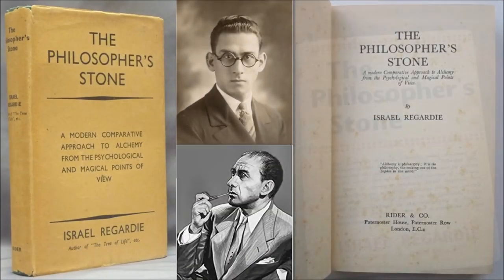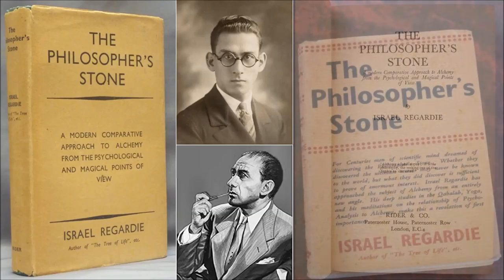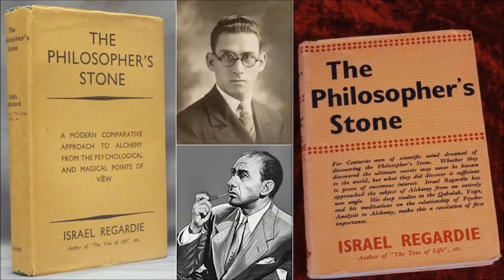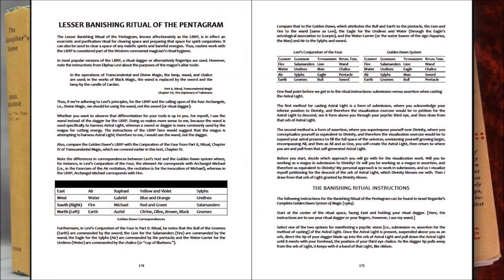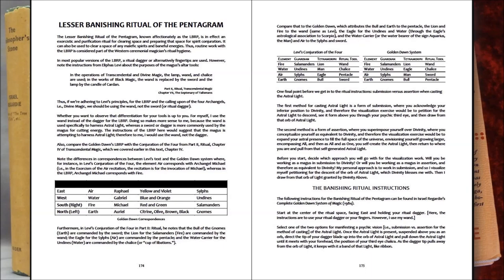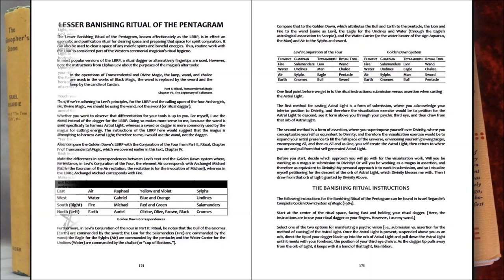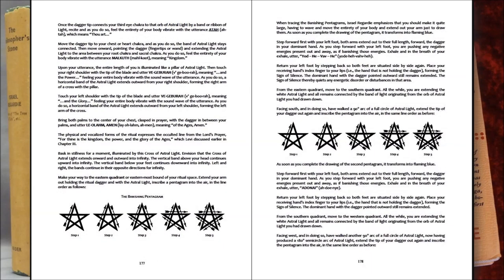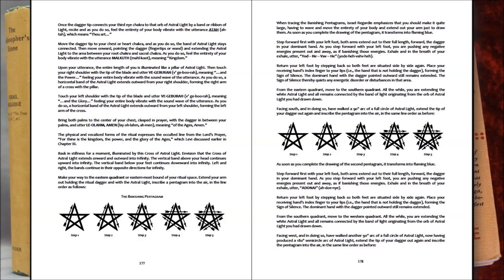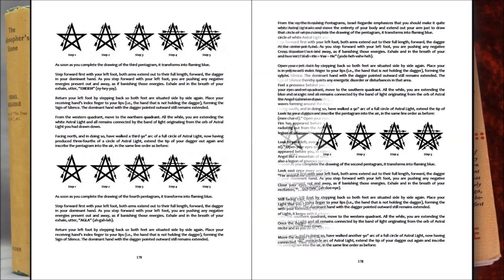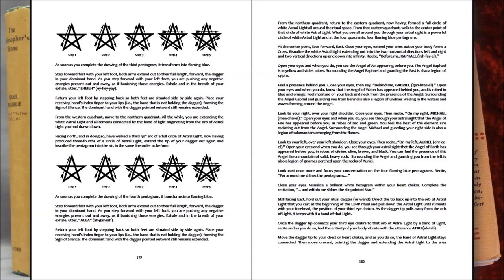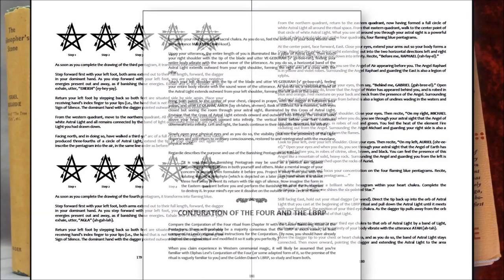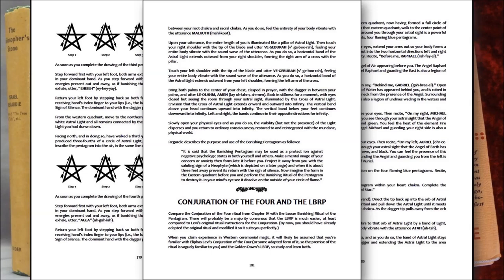The next step, says Rigardi, is to banish the area with the lesser banishing ritual of the pentagram, known affectionately as the LBRP. That's going to make this video much longer than I want, so we'll be skipping that. I think the point of it is to say you want to consecrate your space — purify the air so there are no unwanted psychic energies lingering by.